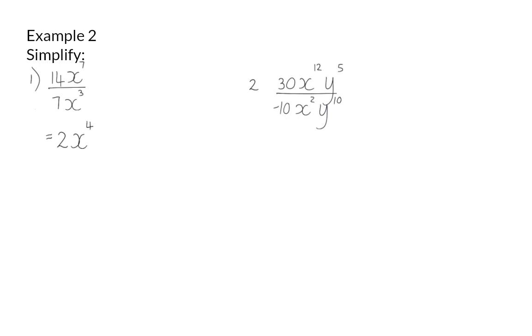In the second example, we once again have constants and variables. The constants do not have exponents and can be divided as usual, and 30 divided by minus 10 is minus 3. Next, I can simplify my x's and my y's separately, using the exponential law.